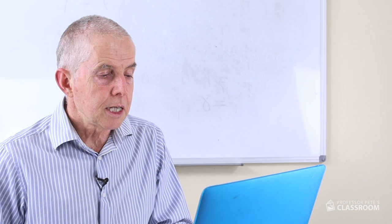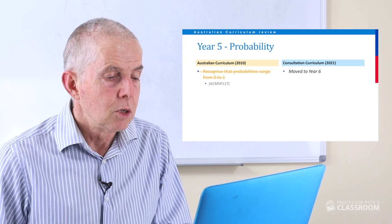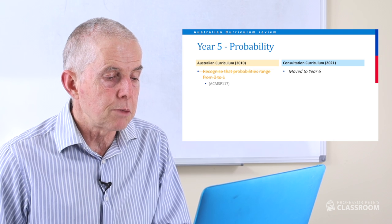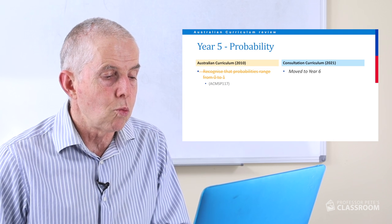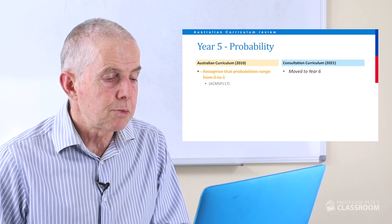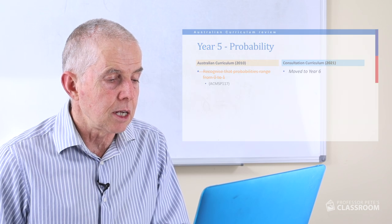The next content descriptor — recognising that probabilities range from zero to one — which used to be in Year 5 has been moved completely to Year 6.